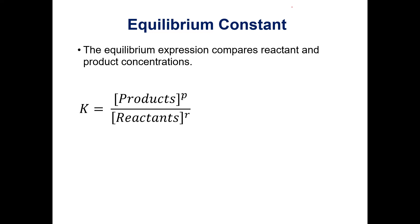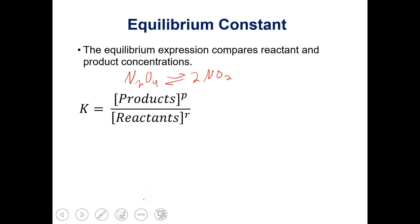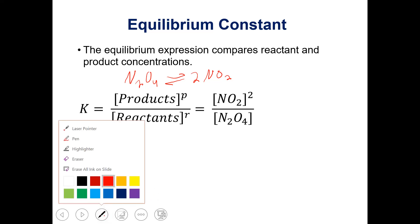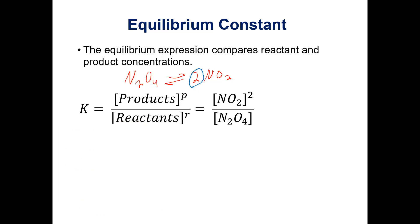The equilibrium constant K is expressed as the concentration of the products over the concentration of the reactants, and each is raised to a power. For our equilibrium constant, these powers come from the stoichiometric coefficients. For the reaction N2O4 yielding 2NO2, the expression is the concentration of NO2 squared over the concentration of N2O4. The coefficient of 2 before NO2 means NO2 is squared.